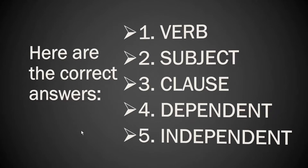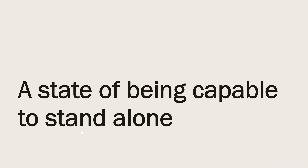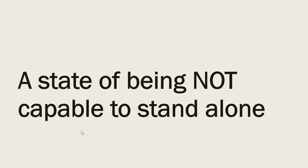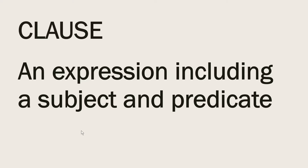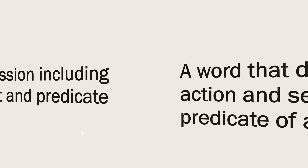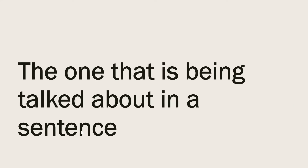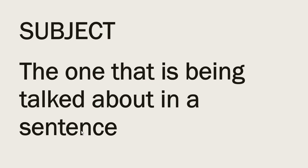Using the answers from the previous activity, try to identify what is being described. A state of being capable to stand alone — Independent. A state of being not capable to stand alone — Dependent. An expression including a subject and a predicate — Clause. A word that denotes an action and serves as a predicate of a sentence — Verb. The one that is being talked about in a sentence — Subject. Nice! That's a good start.